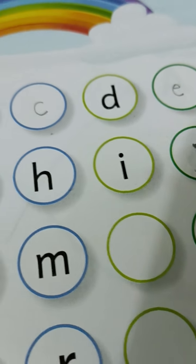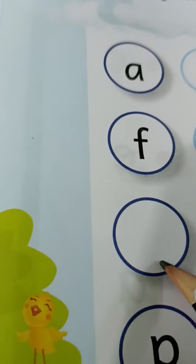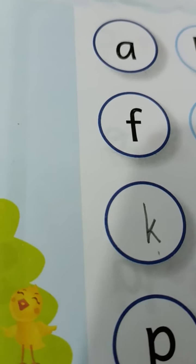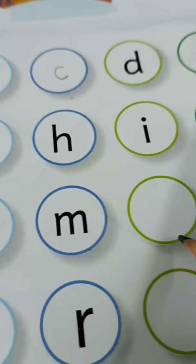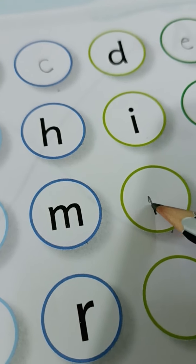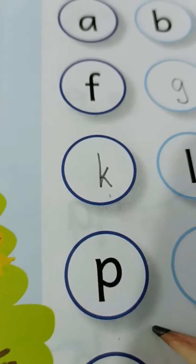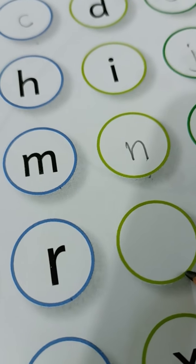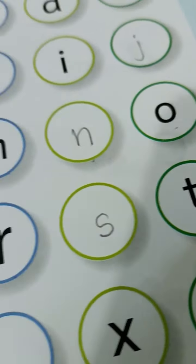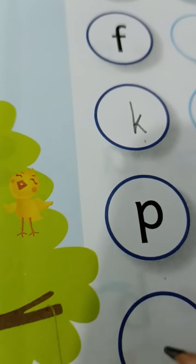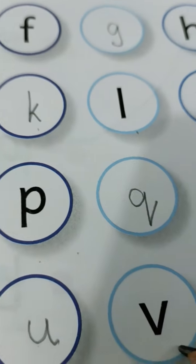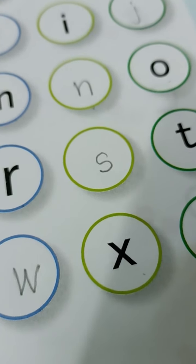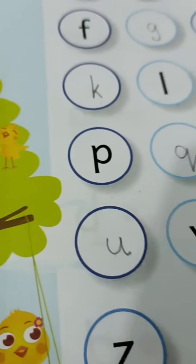Next, J. After J, K. Small letter K. Next, L, M, N. N is there — come on, write fast. O, P. Next letter Q, R. Next letter S. T. Next letter is missing — after T, U. V. Next letter W, X, Y. Next letter Z.